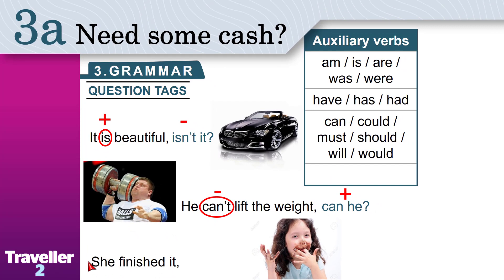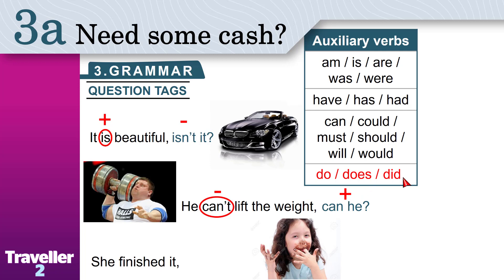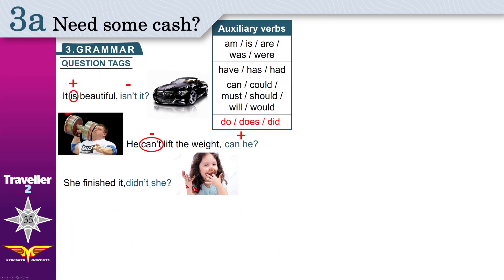'She finished the cake' — how do you complete this with a question tag? Where is the auxiliary verb? There is none. If there is no auxiliary verb, use 'do', 'does', or 'did'. We use 'do' and 'does' for present simple — 'does' with he, she, it; 'do' with I, you, we, they. We use 'did' for past simple. 'She finished it' is past, so use 'did'. The sentence is affirmative, so the tag is negative: 'didn't she?'